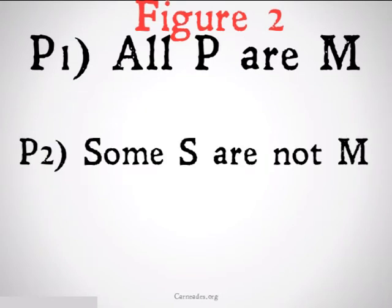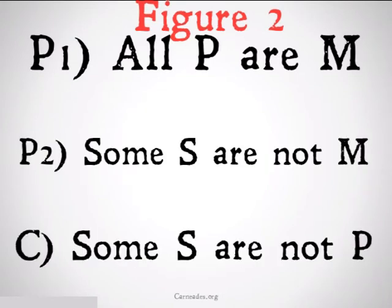All P are M. Some S are not M. Therefore, some S are not P. This is a valid form of figure two.